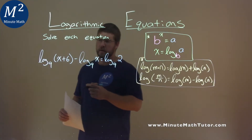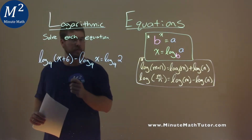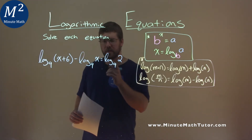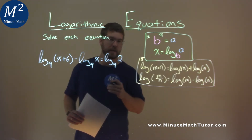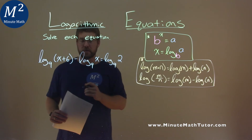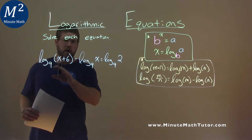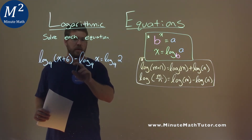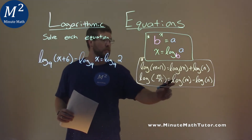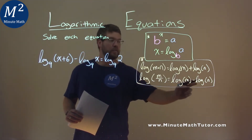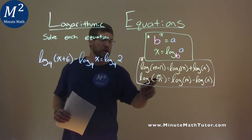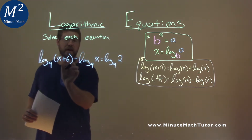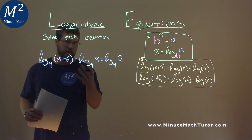We're given this problem right here: log base 9 of x plus 6 minus log base 9 of x is equal to log base 9 of 2, and we need to solve this equation. Our rules tell us we have a log with the same base and we're subtracting them. Log of m minus log of n is the same as log of m divided by n, so we can take the x and x plus 6 and divide them by each other.